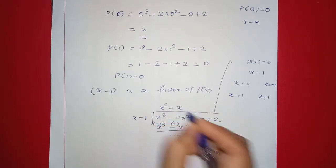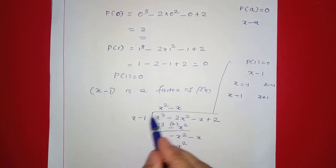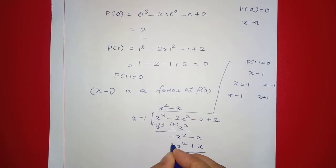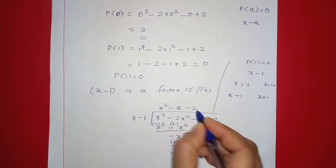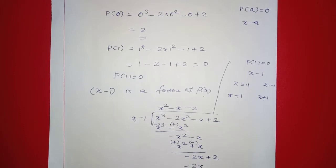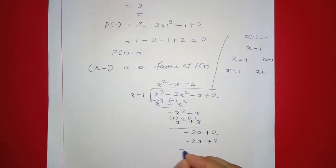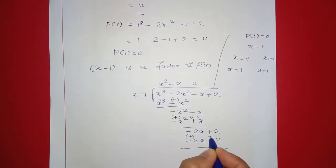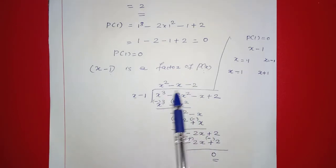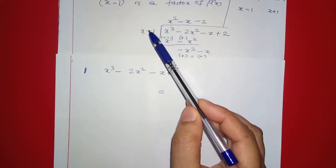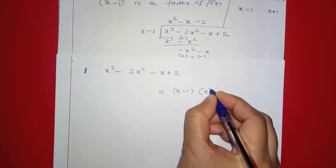Continuing the division: bring down terms. Minus x squared divided by x gives minus x. Multiply minus x by x minus 1: minus x squared plus x. Sign change gives minus x squared plus x squared is 0. Then minus 2x, and the quotient gives x squared minus x minus 2.